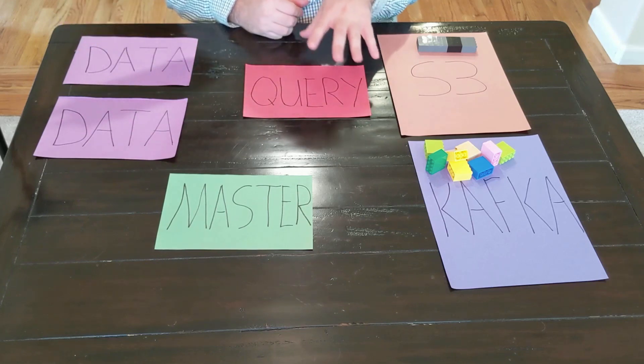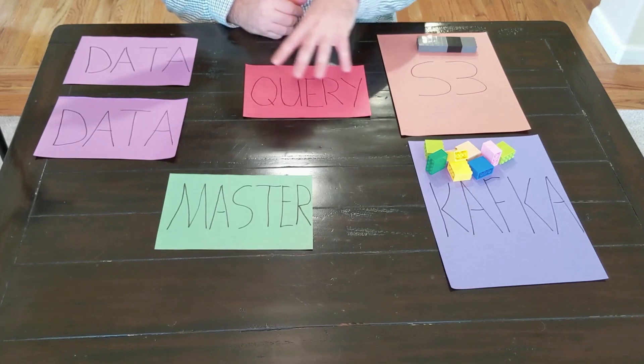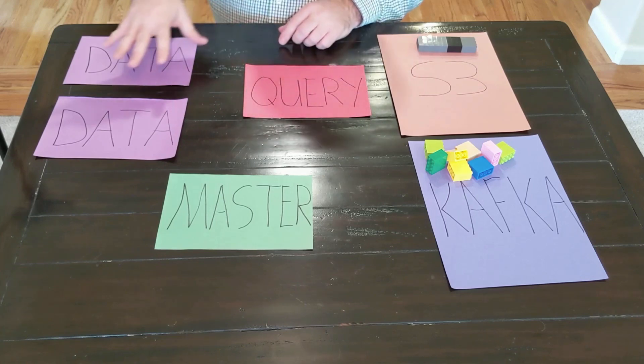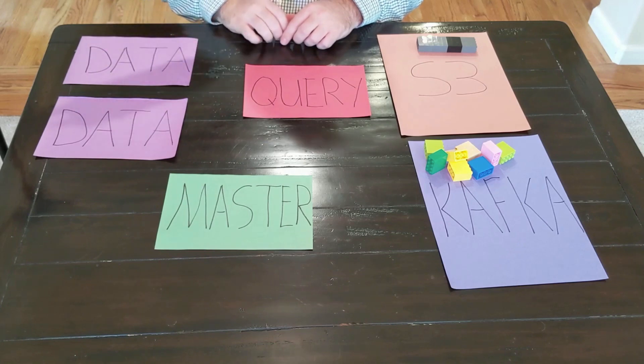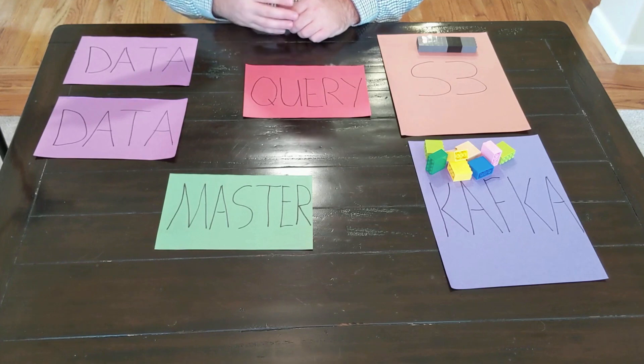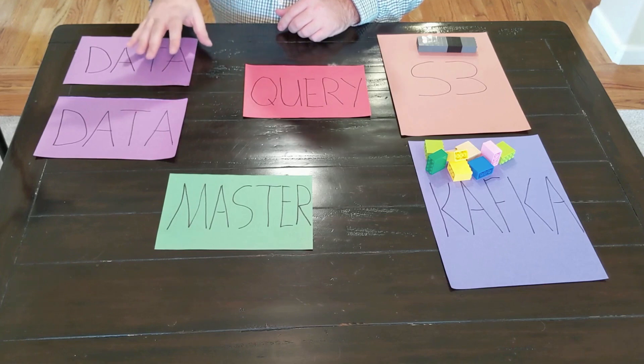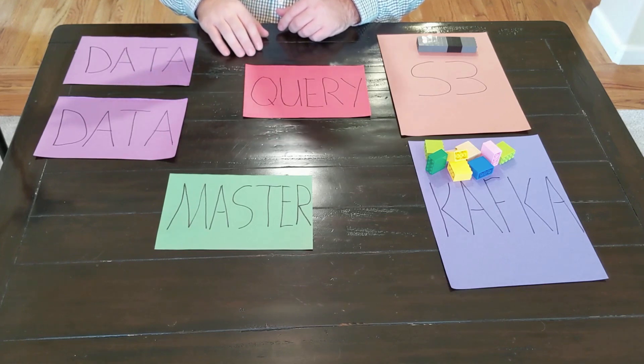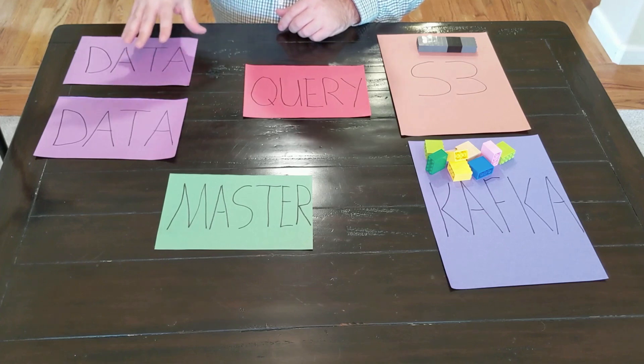When that query actually runs, the data is not actually stored here. The data is actually stored on these data server types. And these data server types are important because they're there to do several different things. They're there to serve up historical data and to retrieve data for those queries. They're also there to actually do real-time ingestion, as we're about to see in a second, and they're there to actually process batch data as well.